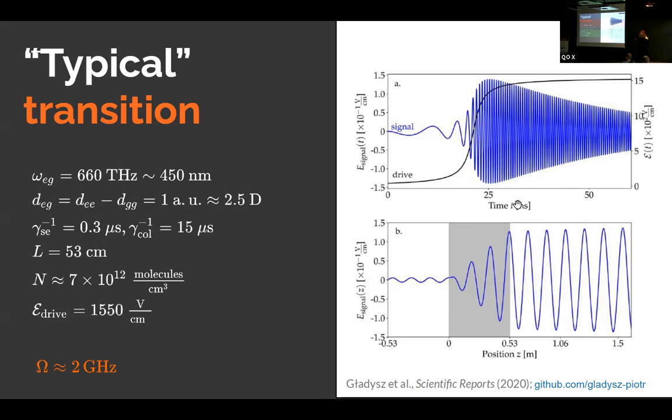And finally, we get the result. So, here you can see how the signal builds up upon illumination with a drive whose envelope is shown here. We take some typical values of the parameters, that is like one atomic unit for the dipole moment, typical transition frequency, and so on. But this is just an example. We see that the signal builds up in time, in position, you see it here, the grayish rectangle is the medium. And we get a signal of the frequency of 2 gigahertz. So, this works as a proof of principle.